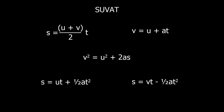There are five equations of constant acceleration: S equals (U plus V) over 2 times T, or S equals half(U plus V) times T; V equals U plus AT; V squared equals U squared plus 2AS; S equals UT plus half AT squared; and S equals VT minus half AT squared. Depending on what we want to work out and what information we're given, we use the different equations.